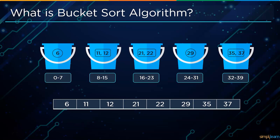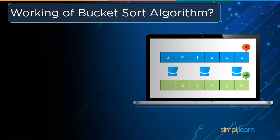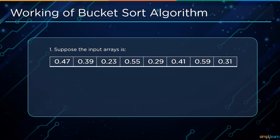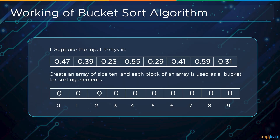That is how bucket sort works in real time. Now let's learn the working of bucket sort algorithm in depth. Suppose we have an array consisting of floating point values as input: 0.47, 0.39, 0.23, 0.55, 0.29, 0.41, 0.59, and 0.31. We then create an array of size 10 and store 0 in each block.